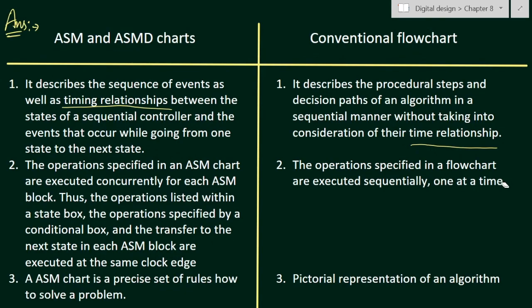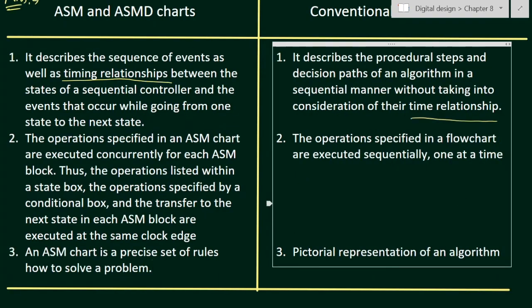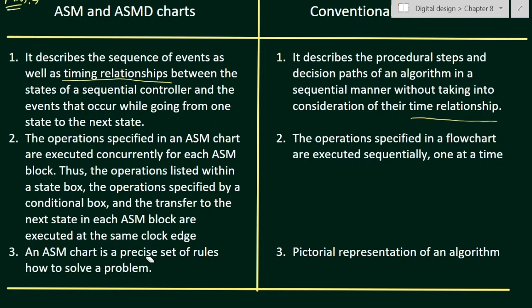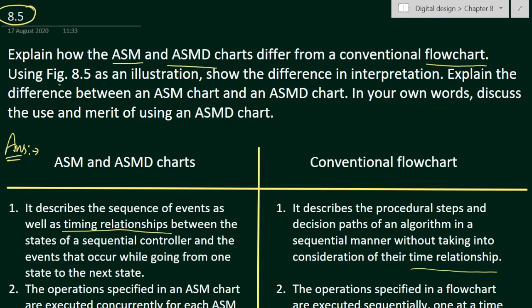In contrast, the operations specified in a flowchart are executed sequentially, one at a time — step by step. The third difference is that an ASM chart is a precise set of rules for how to solve a problem, whereas a conventional flowchart is a pictorial representation of an algorithm — we first make the flowchart for whatever algorithm we are going to design. That completes the first part of the problem.